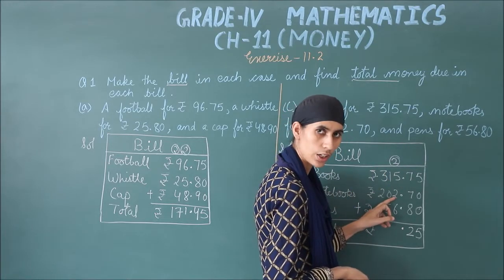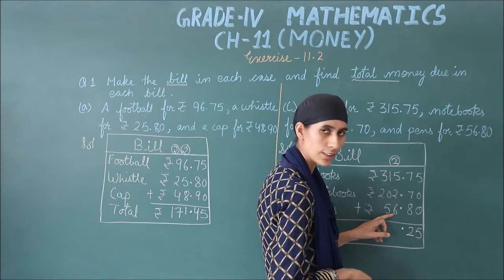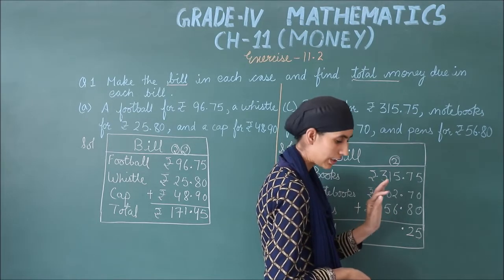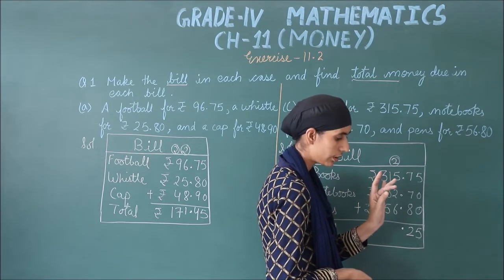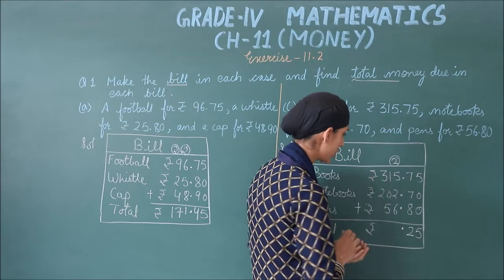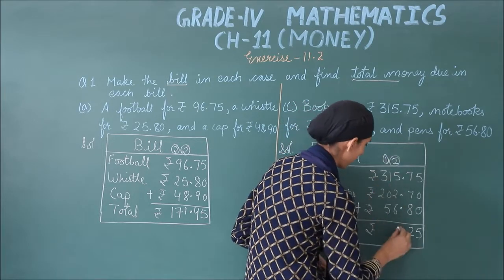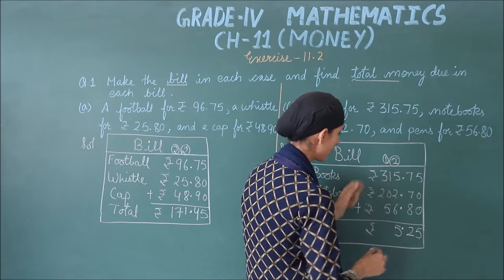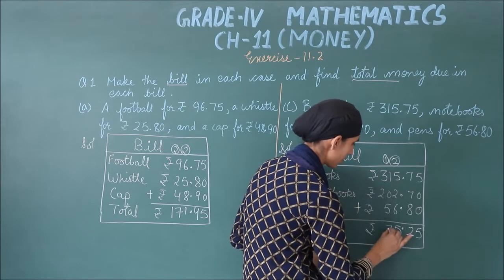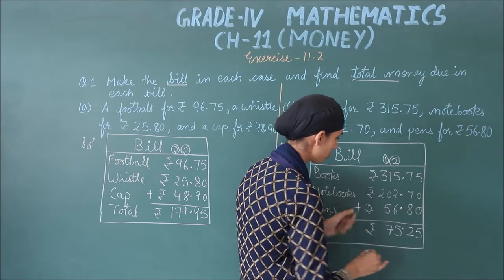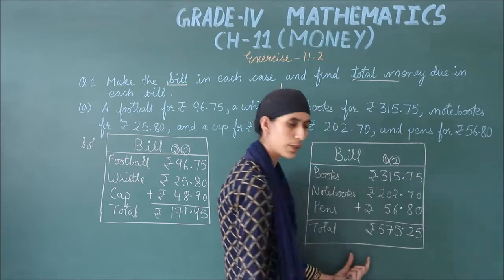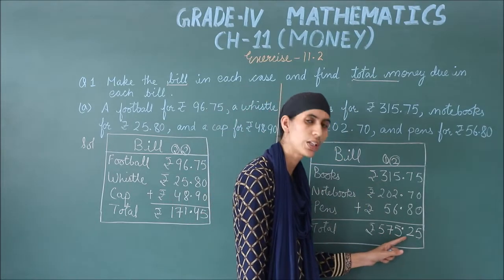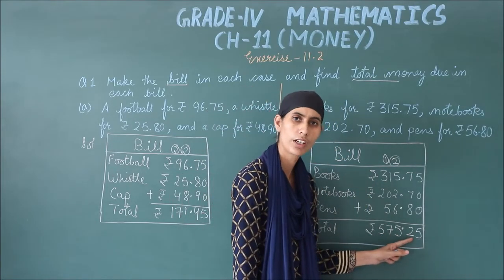9 plus 6 — counting: 10, 11, 12, 13, 14, 15. Carry 1, write 5. 5 plus 1 is 6, 6 plus 1 is 7. Next: 3 plus 2 is 5. So your bill total is ₹575.28.